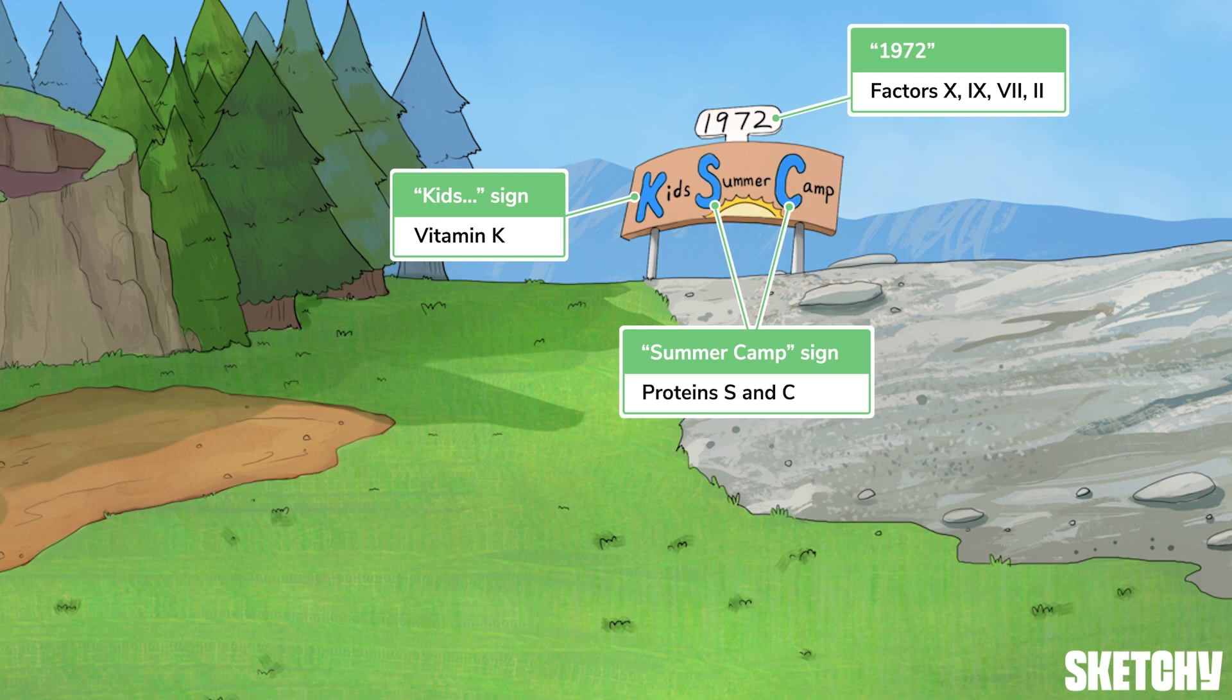These vitamin K-dependent factors are important to remember because drugs that inhibit the activation of vitamin K, like warfarin, will prevent the liver from producing adequate or fully functional coagulation factors, producing an anticoagulant effect.